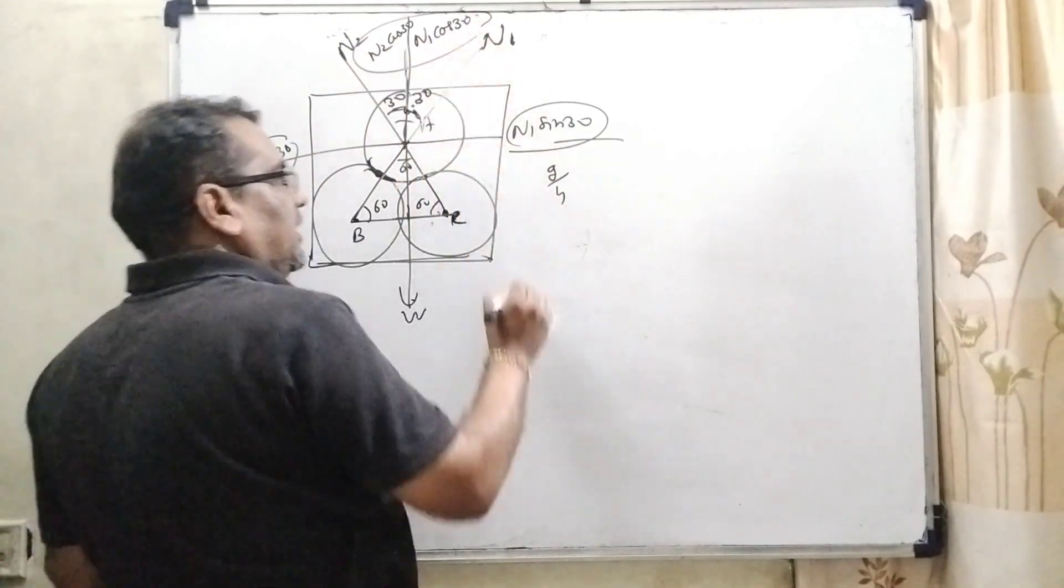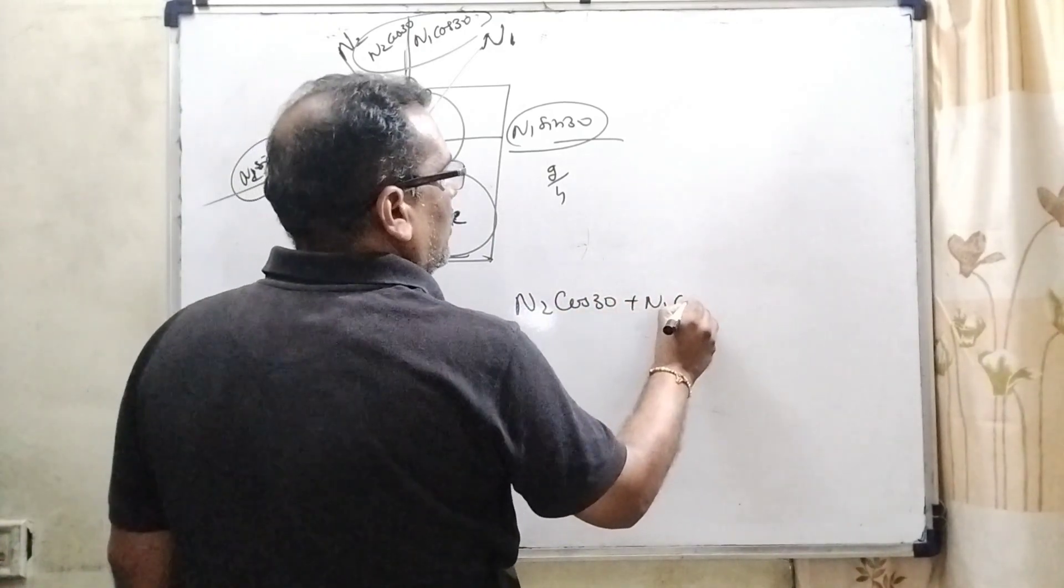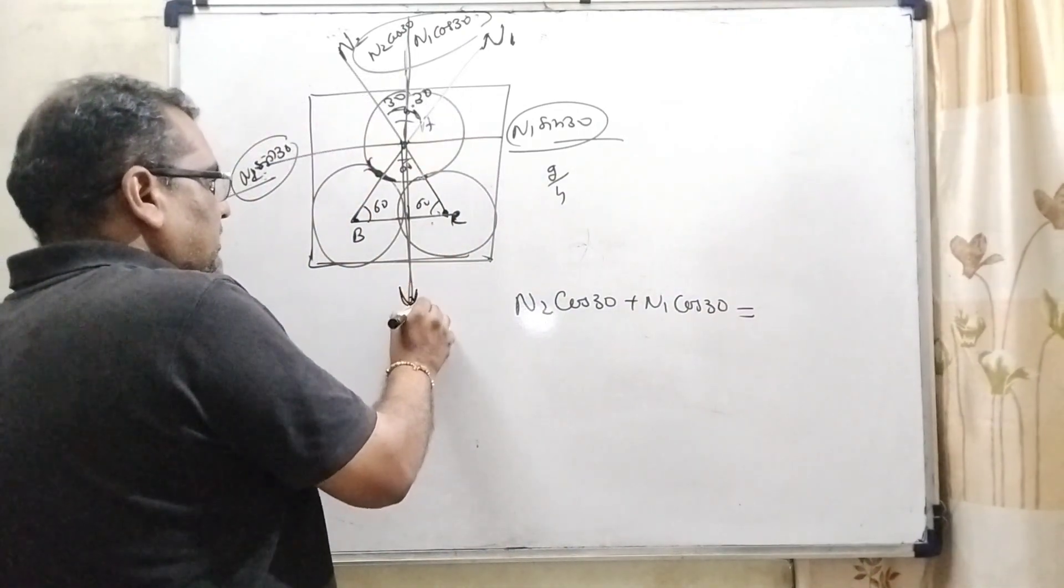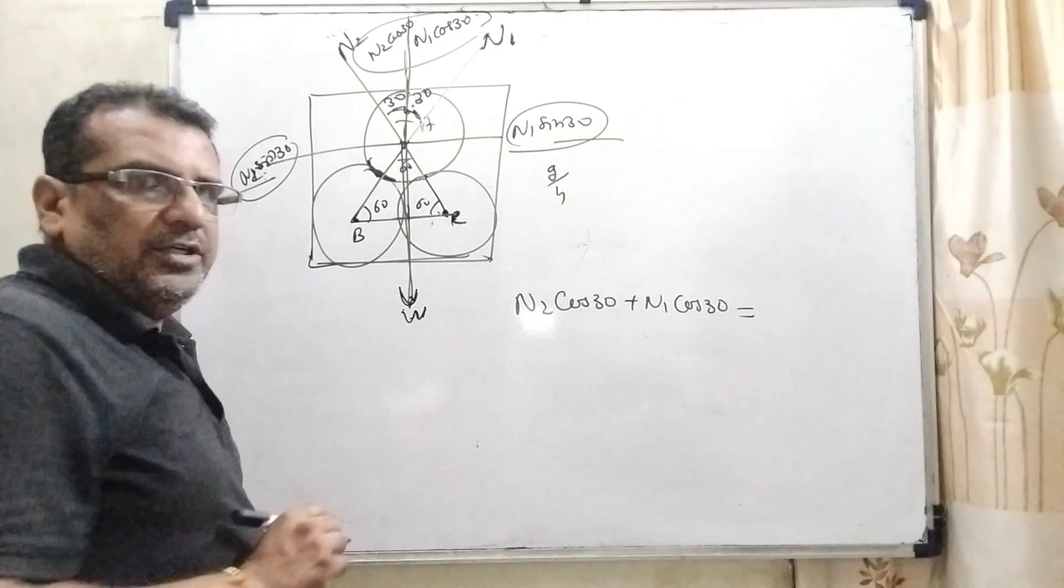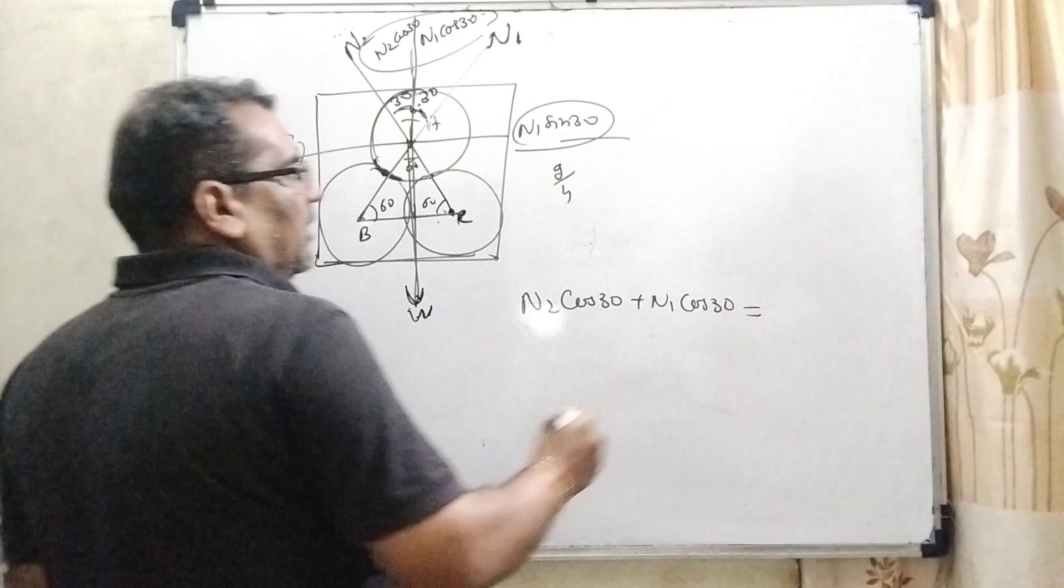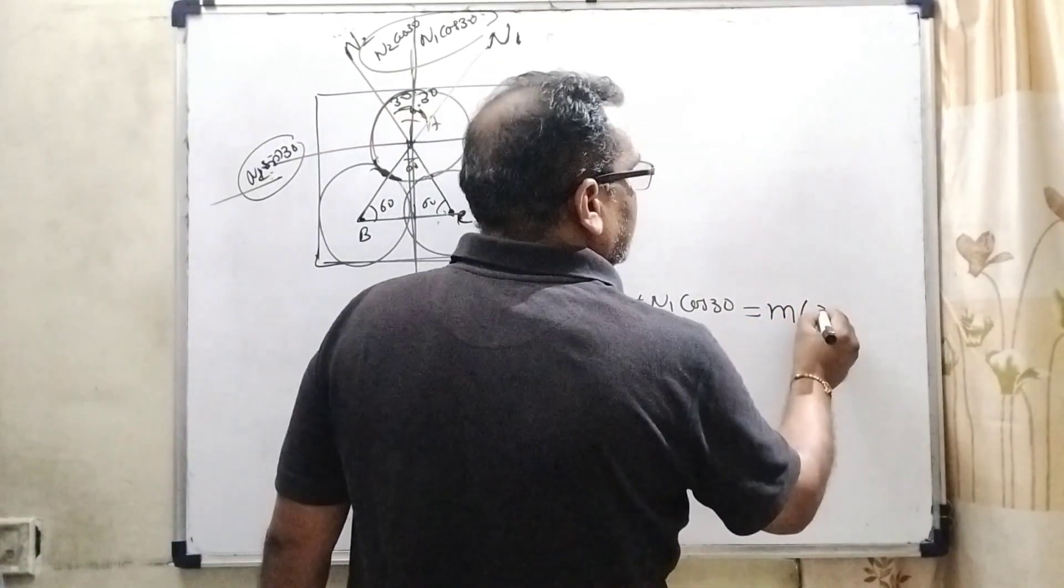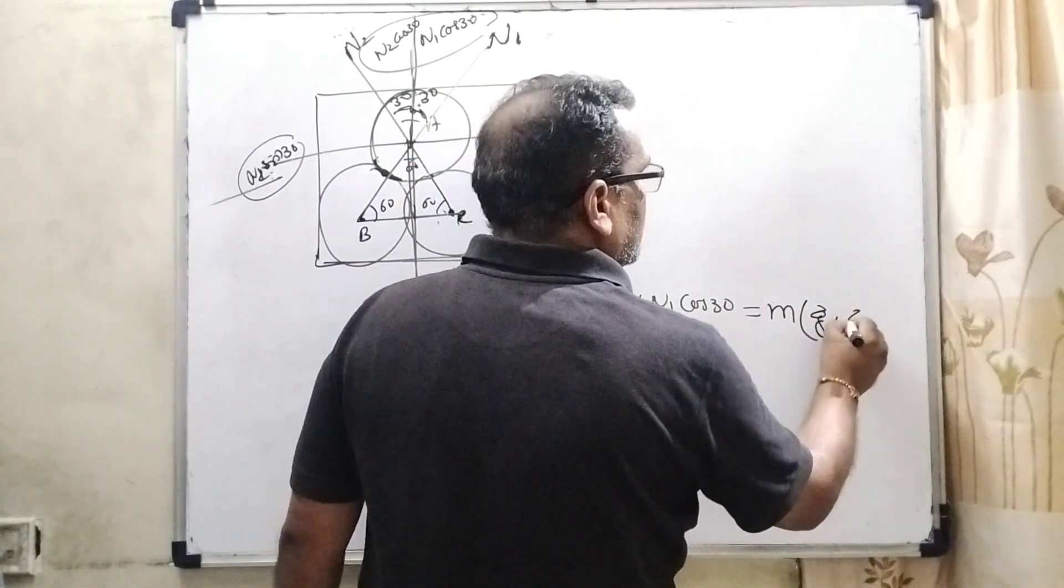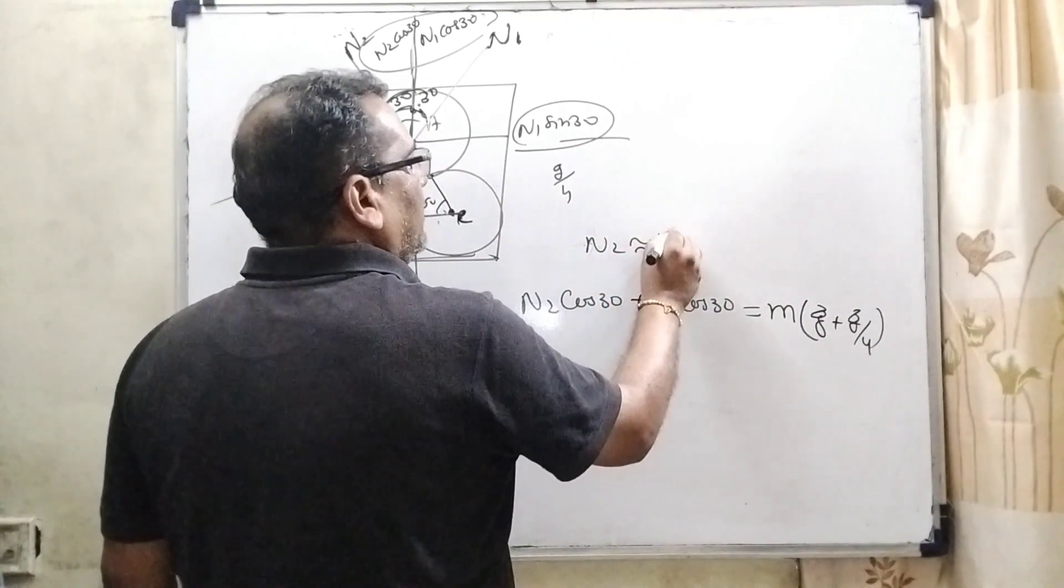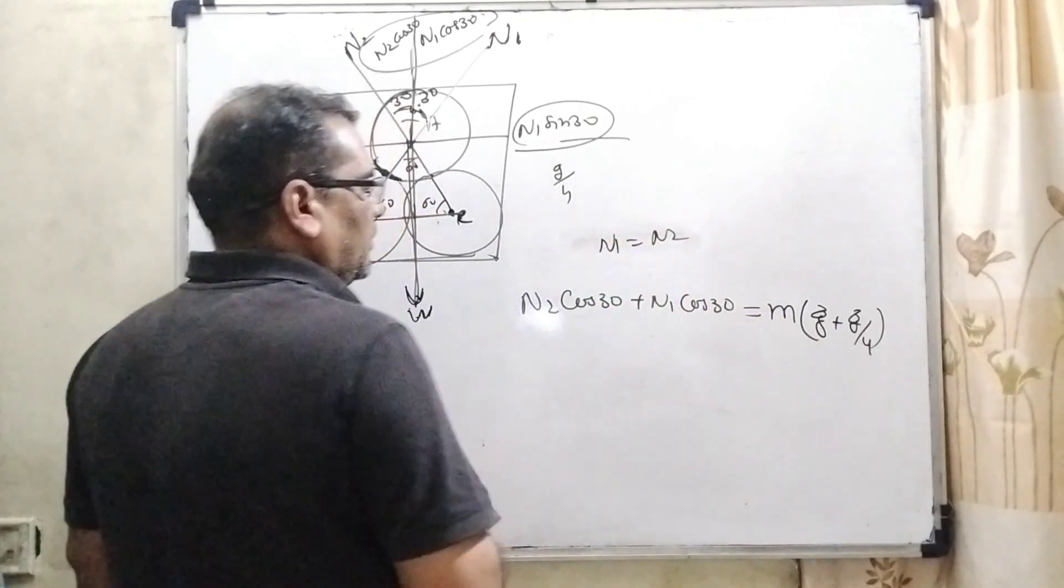So, whole weight, N2 cos 30 plus N1 cos 30, is equal to the normal force directing downward direction. So, therefore, due to sphere A, what is the weight? That is mass times total acceleration, which is g plus g by 4.